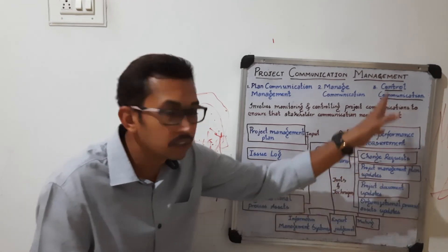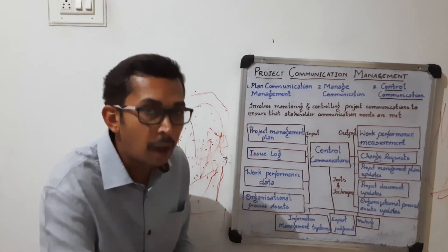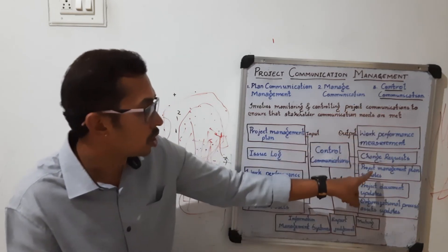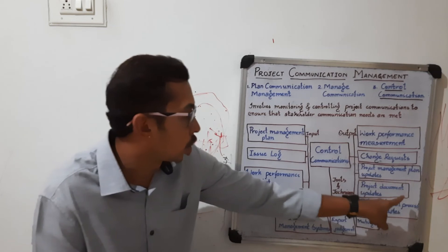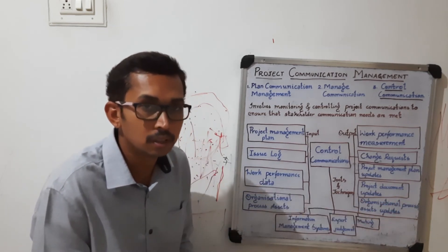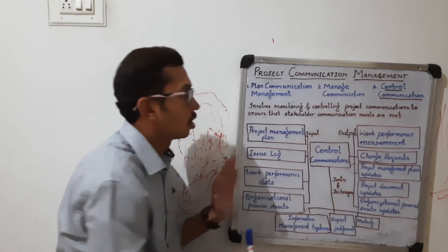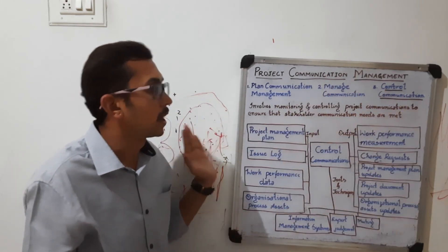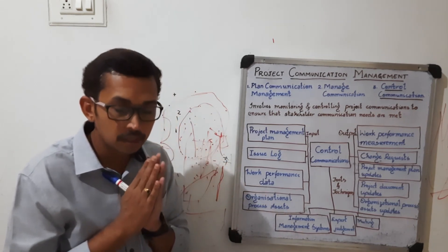After that, everything is documented and updated according to the measures taken — project management plan updates, project document updates, and organizational process assets updates. This is the flowchart of control communication management. I hope you understood. Thank you, Namaste.